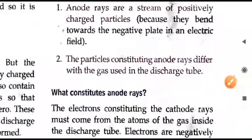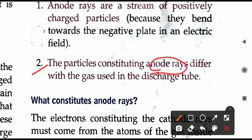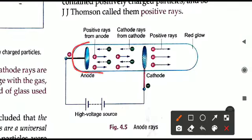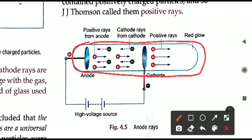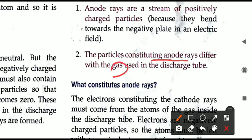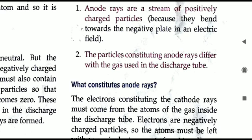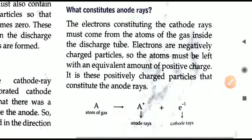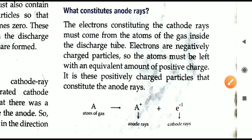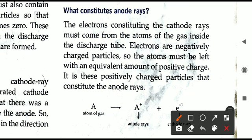Second, the particles constituting the anode rays differ with the gas used in the discharge tube. A gas is filled inside this discharge tube, and if we change the gas, the particles in the anode rays will also be different — depending on the nature of the gas used. Now, what actually forms these rays? The electrons that constitute the cathode rays come from the atoms of the gas inside the discharge tube. Whatever gas is filled, its atoms have electrons, and those are the electrons present in the cathode rays.